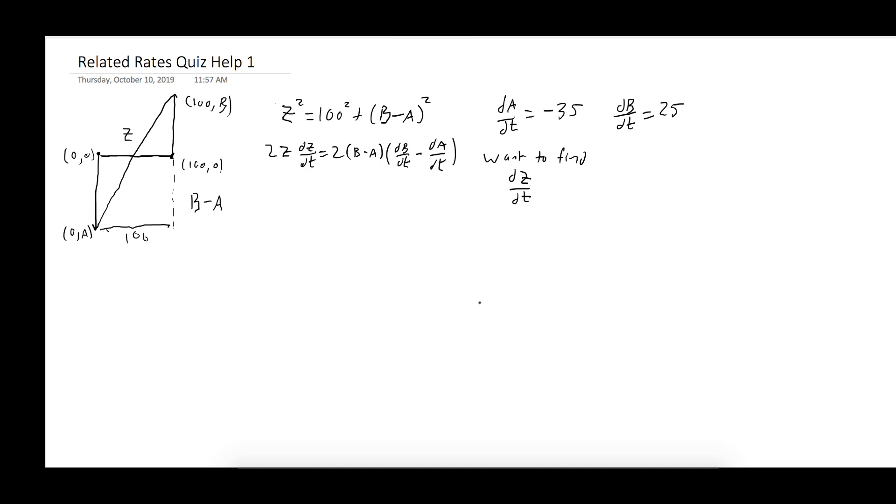So to figure out what the values of A and B are, we're going to have to go back to our question and see that our ship has been traveling for four hours, right? Because we started at noon and we ended at 4pm. So ship A is going south at 35 kilometers per hour, so it's -35 times 4, which equals -140. And ship B is going north at 25 kilometers an hour, so 25 times the four hours, and that gives us 100.